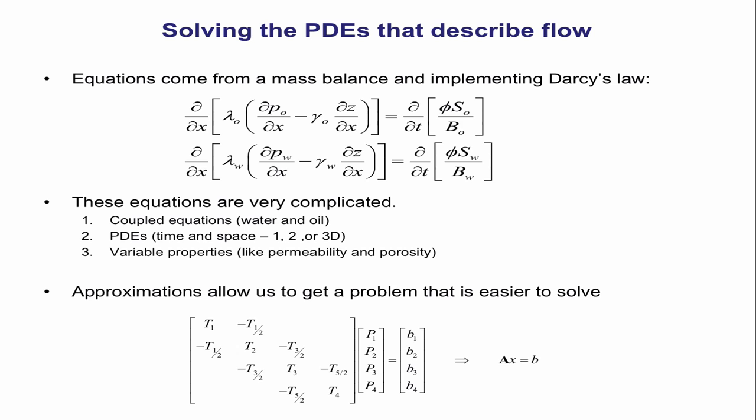In 1D for a two-phase oil-and-water system, you get a set of coupled PDEs with spatial and time dependence. They have variable properties — the mobilities include functions of relative permeabilities that can vary across the reservoir. When we apply discretization to take that continuous equation to a discrete one, we end up with something algebraic. The unknowns are the pressures we want to solve for. This is called a transmissibility matrix — we'll learn how to define that in this class. In 1D it's always tridiagonal; in 2D it'll be pentadiagonal.